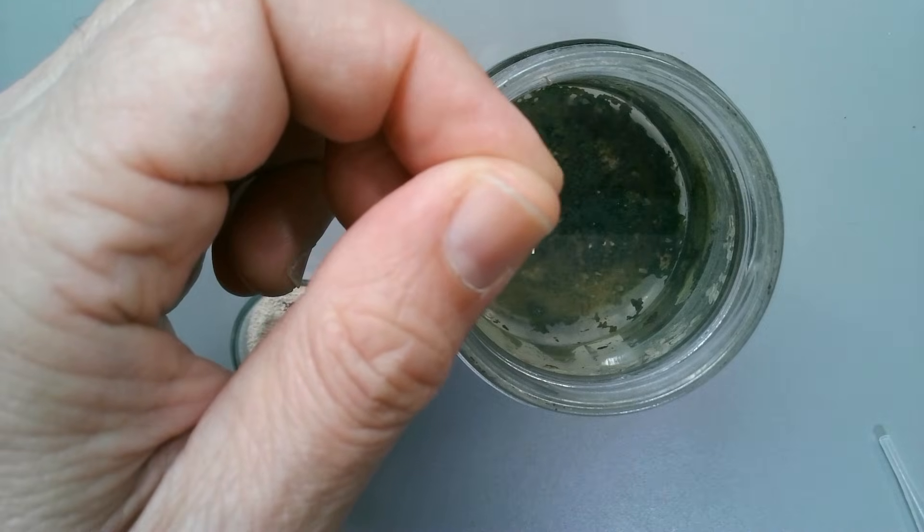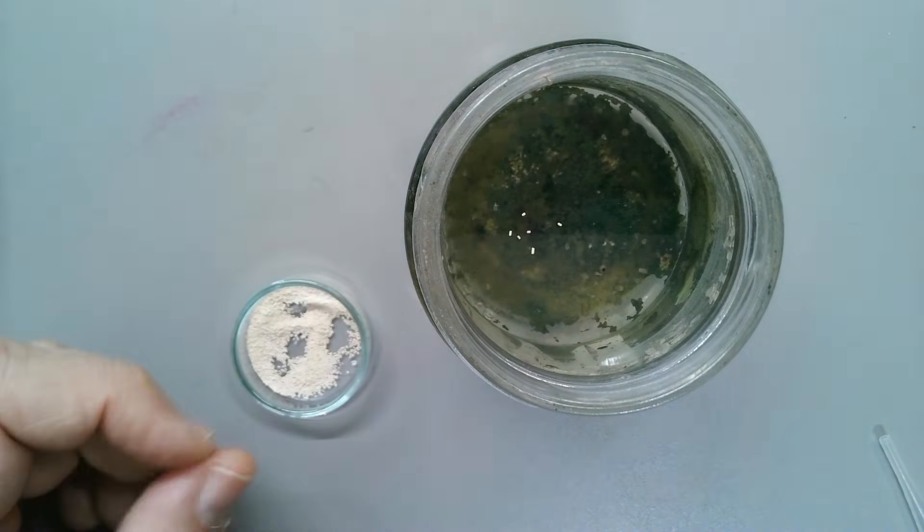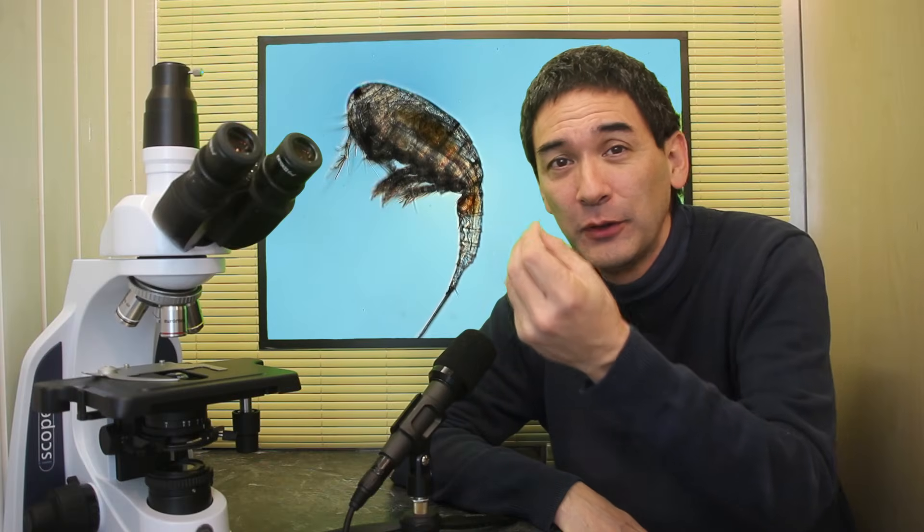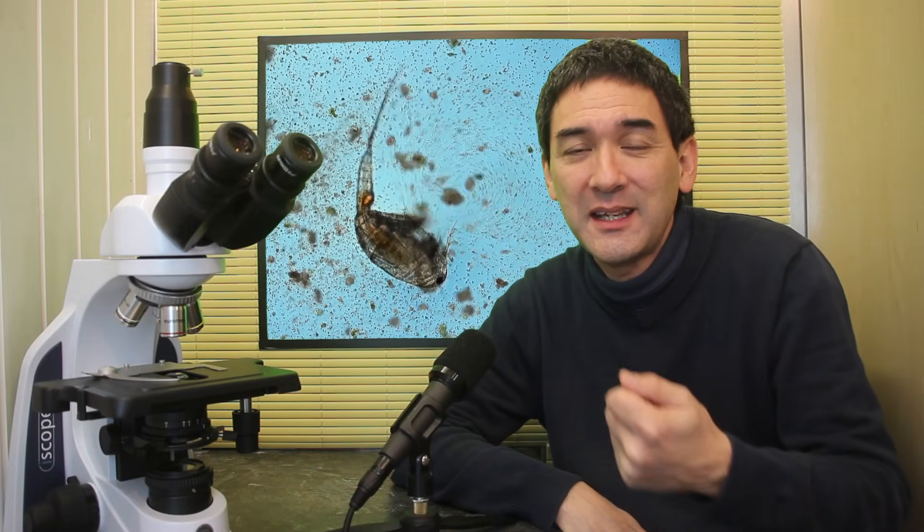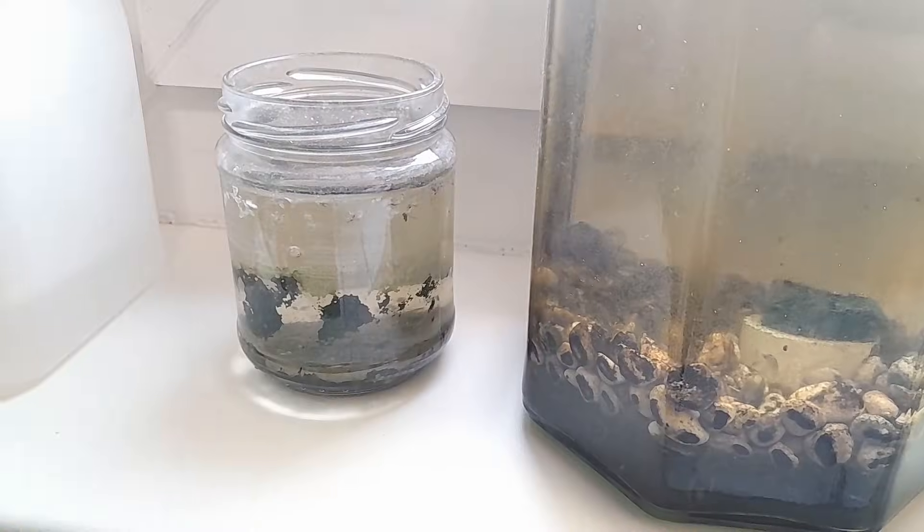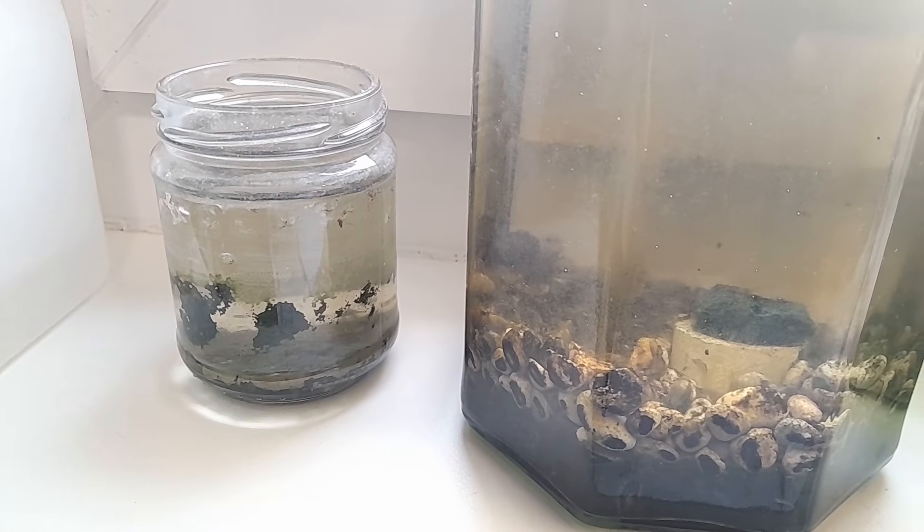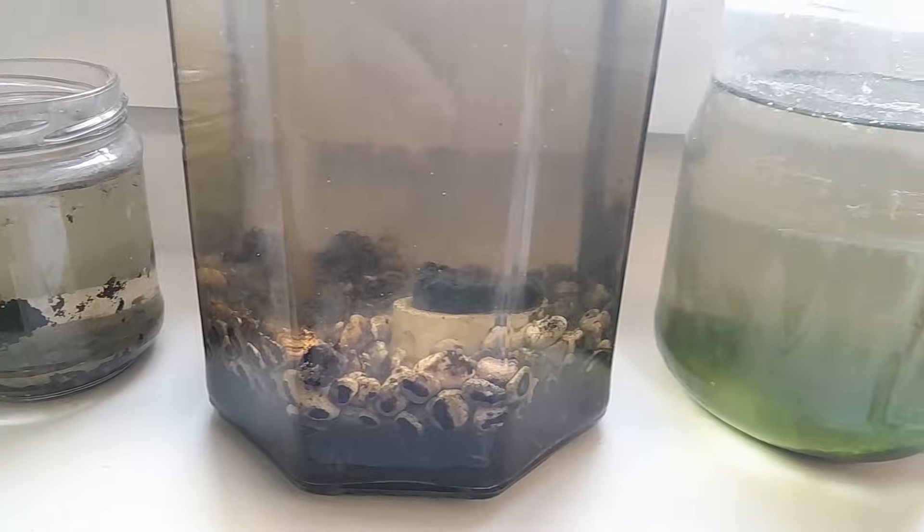Of course, it's possible to directly sprinkle the yeast into the jar of water with the water fleas, but I found out that sometimes the yeast either floats on top or sinks to the bottom. So mixing it first is a good idea so that the yeast cells are better distributed. I also decided to enrich the diet of those water fleas by adding some chlorella algae.